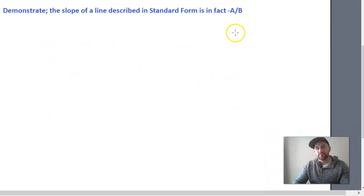Okay guys, we have to demonstrate the slope of a line described in standard form is in fact negative A over B. And here's our standard form: Ax + By = C.